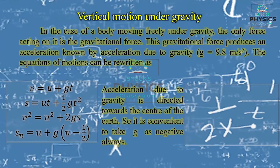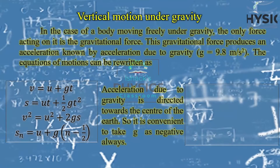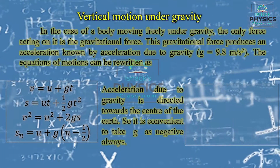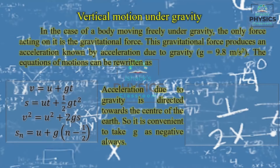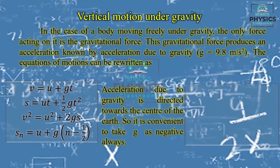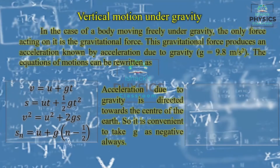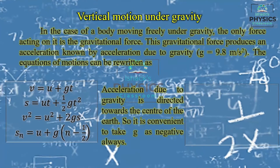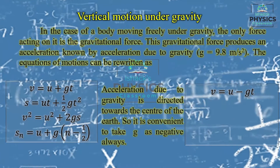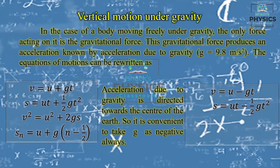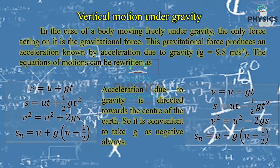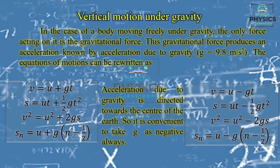Because an object can move upward — for example, throwing an object in the upward direction — or downward, such as dropping from a height. But g is always directed downwards. That is why g is taken as negative, giving: v = u - gt, s = ut - ½gt², v² = u² - 2gs, and Sₙ = u - g(n - ½). If g is already taken as negative (g = -9.8), there is no need to write an extra minus.